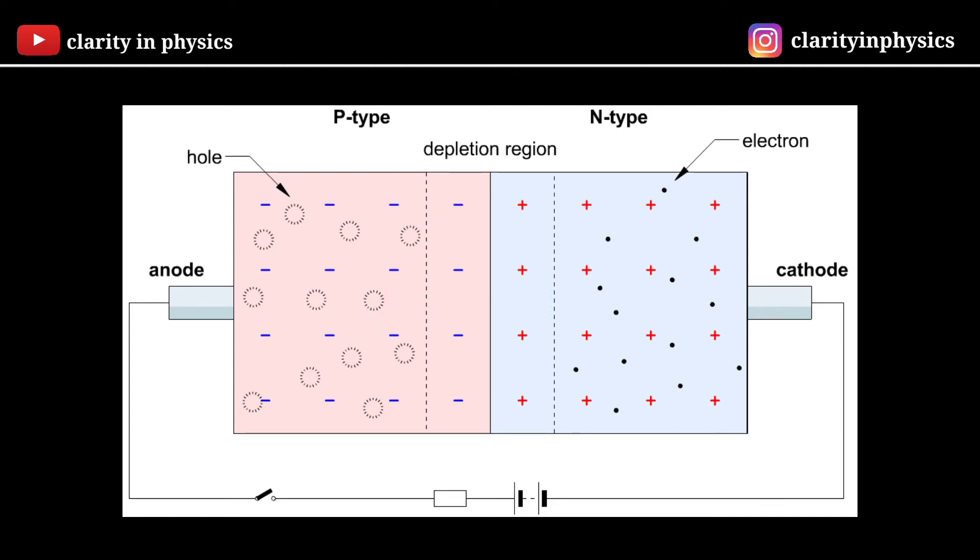As a result, a space charge region is formed on both sides of the junction that has been depleted of its free charge carriers. This is called Depletion Region.